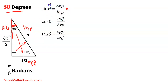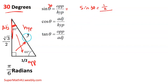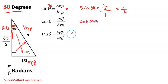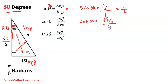So let's write them. My sine of theta — in this case my angle is 30 degrees — so sine of 30 is opposite over hypotenuse. Opposite is one half over my hypotenuse, which is one. One half divided by one is one half. So sine of 30 is one half. Cosine of 30 is adjacent over hypotenuse. Adjacent is square root of three over two, over my hypotenuse which is one. Anything divided by one is the same thing. So cosine of 30 is square root of three over two.